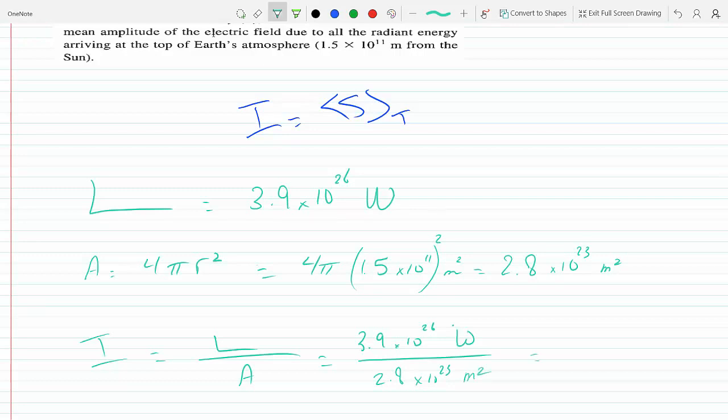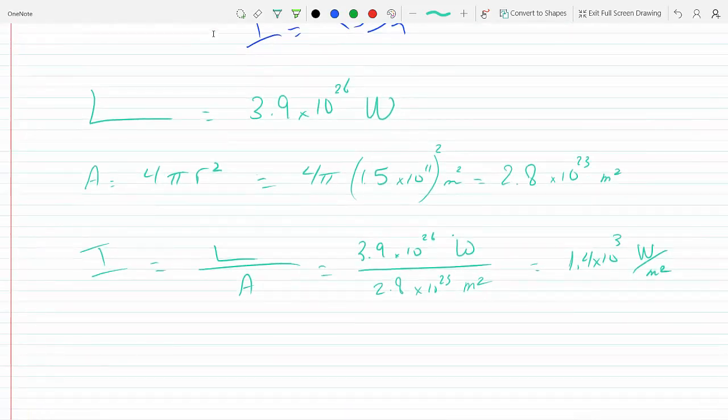So what do we get from that? We got 1.4 times 10 to the 3 watts over meter squared. That's the same as the unit of the magnitude of the Poynting vector. And now we know that the irradiance is equal to c over 2ε times the magnitude of the electric field squared.